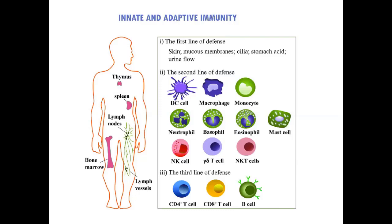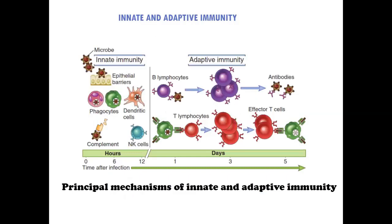Adaptive immunity develops more slowly but is more specialized and effective. It is mediated by lymphocytes — T lymphocytes and B lymphocytes. Here we can see the different organs and cells of the immune system, and the two arms of immunity: innate immunity and adaptive immunity.